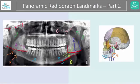Ghost image — we already studied it in terms of earrings, where you'll see blurry images higher up on the other side. But ghost image also applies to the spine and the mandible.